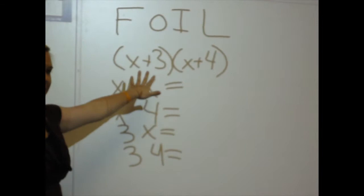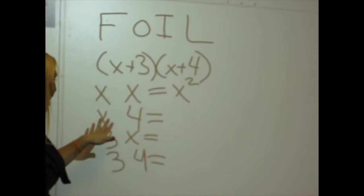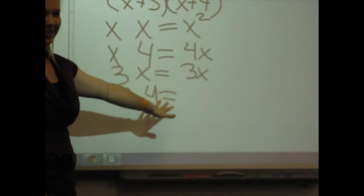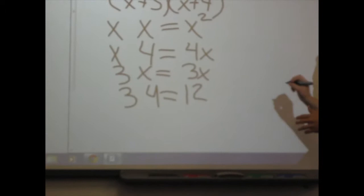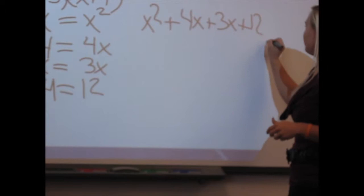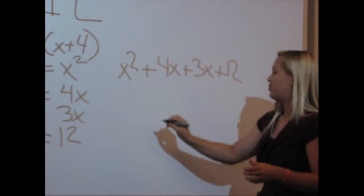So what would X times X be? X squared. X times 4? 4X. 3 times X is 3X. And then 3 times 4? 12. So we put this into that equation. Since it's all positive, it would be X squared plus 4X plus 3X plus 12.